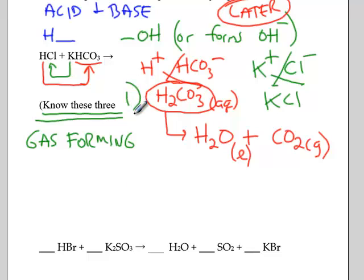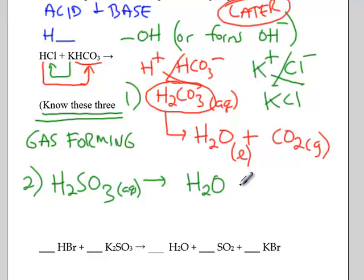So number one is carbonic acid. Number two is sulfurous acid, H2SO3. So when you have sulfurous acid being formed, it will also break down, and it makes the same first product, H2O water, and the other product is sulfur dioxide, which is a gas.